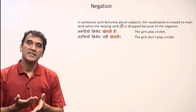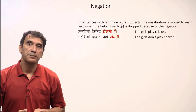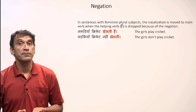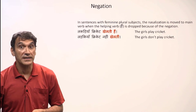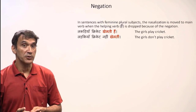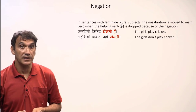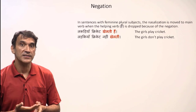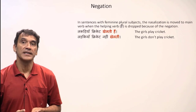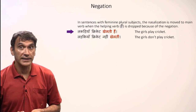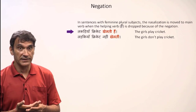There is a small detail to remember: in sentences with feminine plural subjects, the nasalization moves to the main verb — the participle — when the helping verb 'hain' is dropped because of the negation. For example, 'Larkiaan cricket khelti hain' — The girls play cricket.